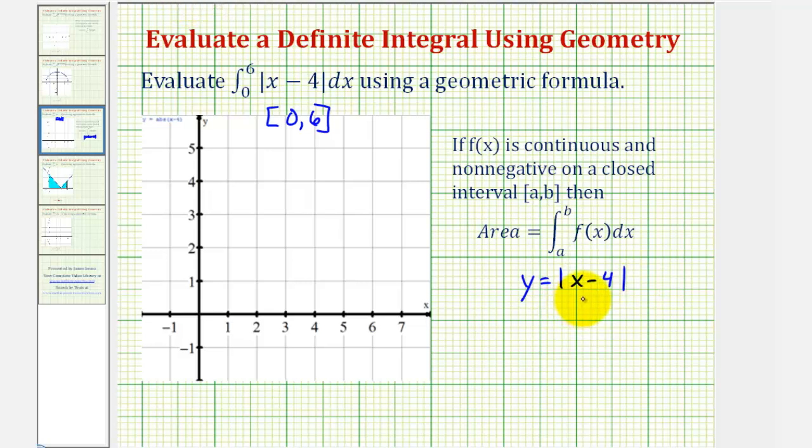Let's start by determining the function values at x equals zero and x equals six. So if x equals zero, notice how we would have y equals the absolute value of zero minus four. The absolute value of negative four is positive four. So our function contains the point zero, four, here.